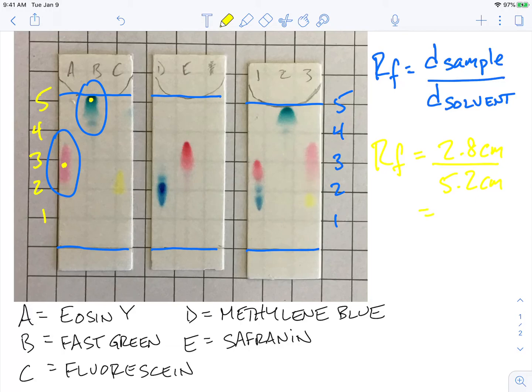So I would say maybe for my RF value for my sample or distance traveled by my sample, let's call it 2.8 centimeters. And on the bottom, let's say 5.2 centimeters. And we would take those two values and divide them. So 2.8 divided by 5.2, I get about 0.54.